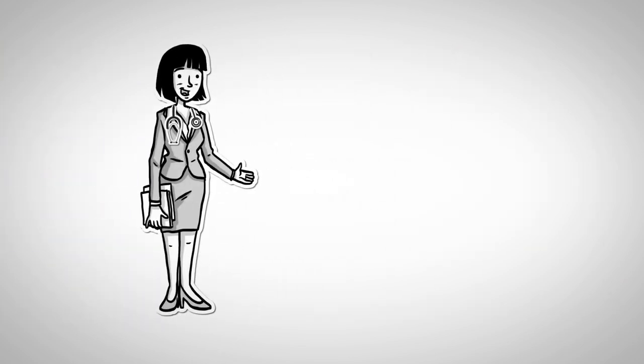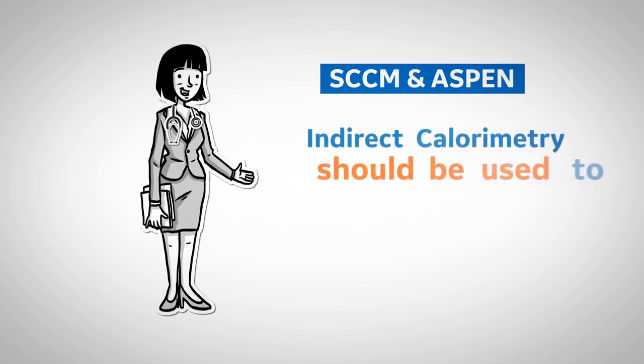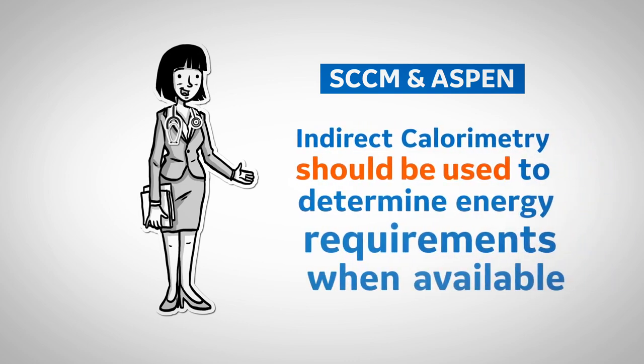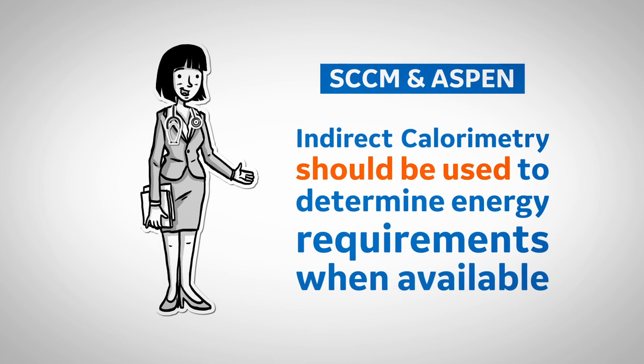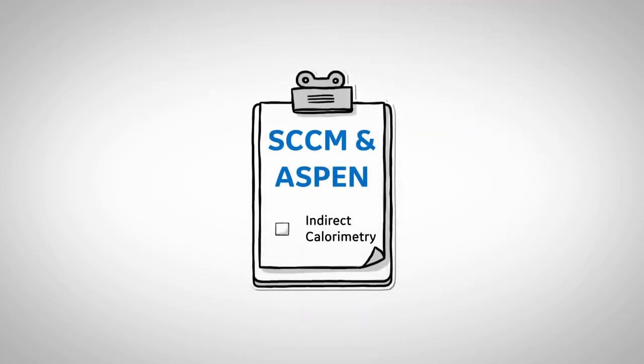And it's not just me saying that. According to the Society of Critical Care Medicine and the American Society for Parenteral and Enteral Nutrition 2016 guidelines for the Provision and Assessment of Nutrition Support Therapy in the Critically Ill Patient, indirect calorimetry should be used to determine energy requirements when available. That means if you've been asked to follow SCCM and ASPEN guidelines, you should be using indirect calorimetry.